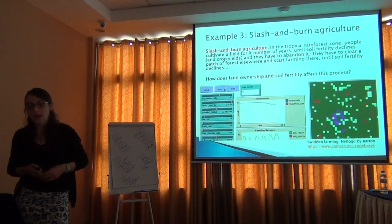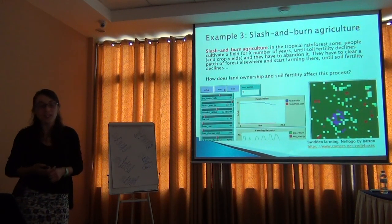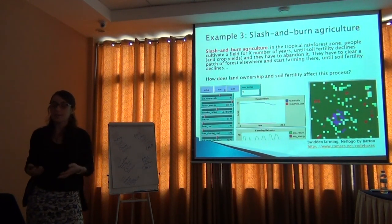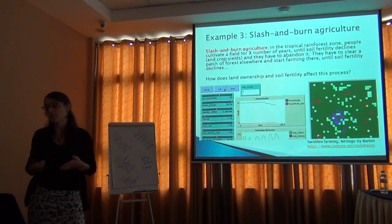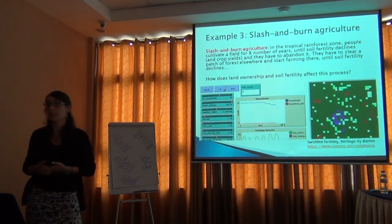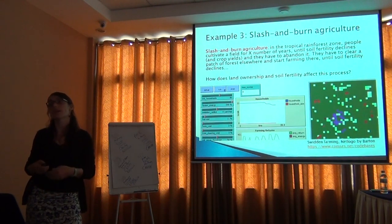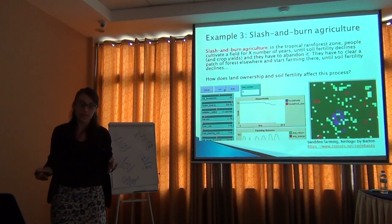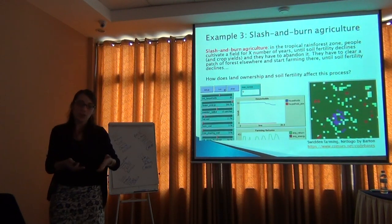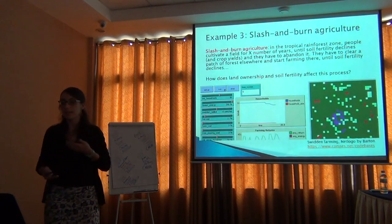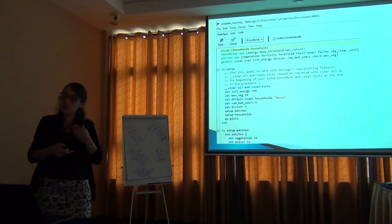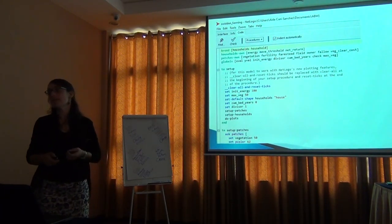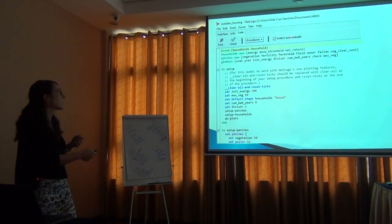Another example is slash-and-burn agriculture. People clear land, cultivate, but after a few years soil fertility declines so much that crop yields are too low and they need to clear land elsewhere. You get a combination of old-growth and regenerating younger forests alongside cultivated areas. You can explore these thresholds — the info tab of a NetLogo model tells you what to explore, and as you learn more, look at the code tab.